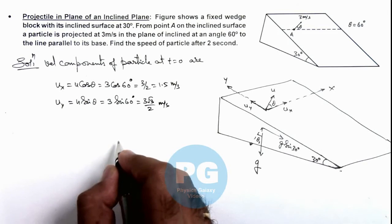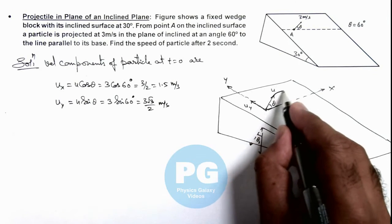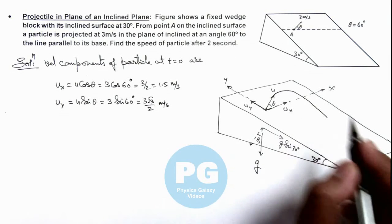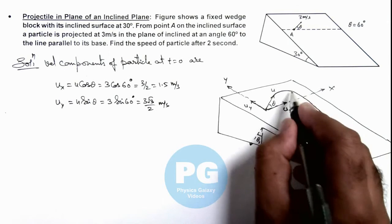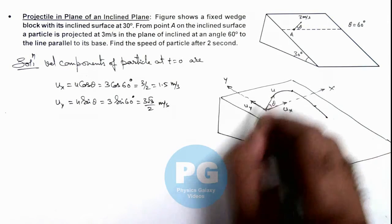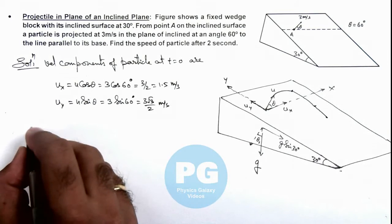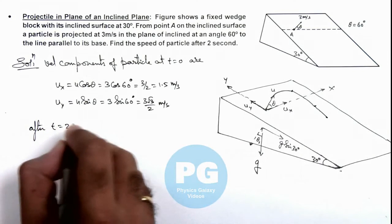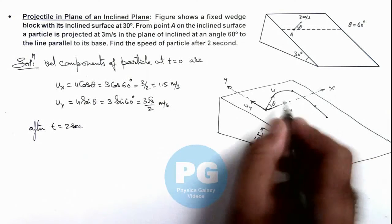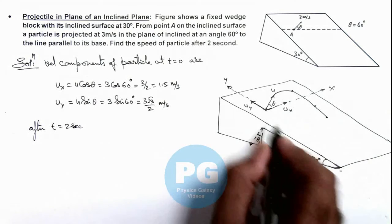After 2 seconds, obviously it'll follow projectile motion and at any point of time it may be here, here, or here. After t is equal to 2 seconds, I am least bothered about the location, I know well that in this motion.